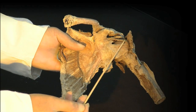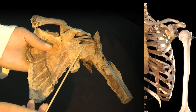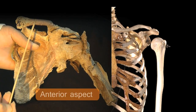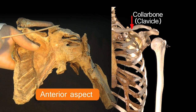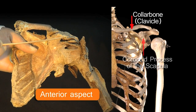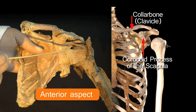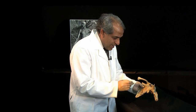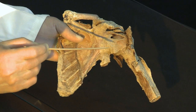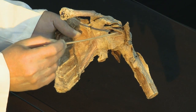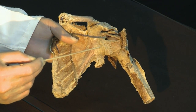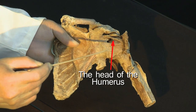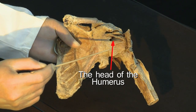Here is the capsule of the shoulder joint seen from in front. This is the left collarbone, and just below the collarbone is a part of the scapula which is the coracoid process. Through this large hole in the capsule of the shoulder joint you can see this glistening surface, which is part of the head of the humerus — the ball in the ball and socket.